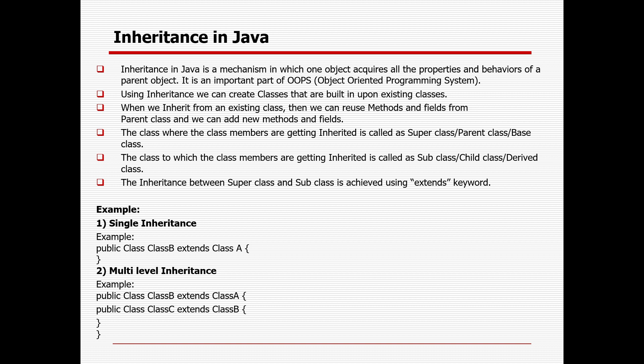You can establish the relationship between parent and child class with the help of the extends keyword in Java. A simple example: suppose you are a family member and you have a son or daughter — they will have some properties from you and your wife, like height, color, character. Similarly, parent to parent and parent to child is also possible. That is called multi-level inheritance. Single inheritance means one class to another class, and multi-level inheritance means parent to parent to child.